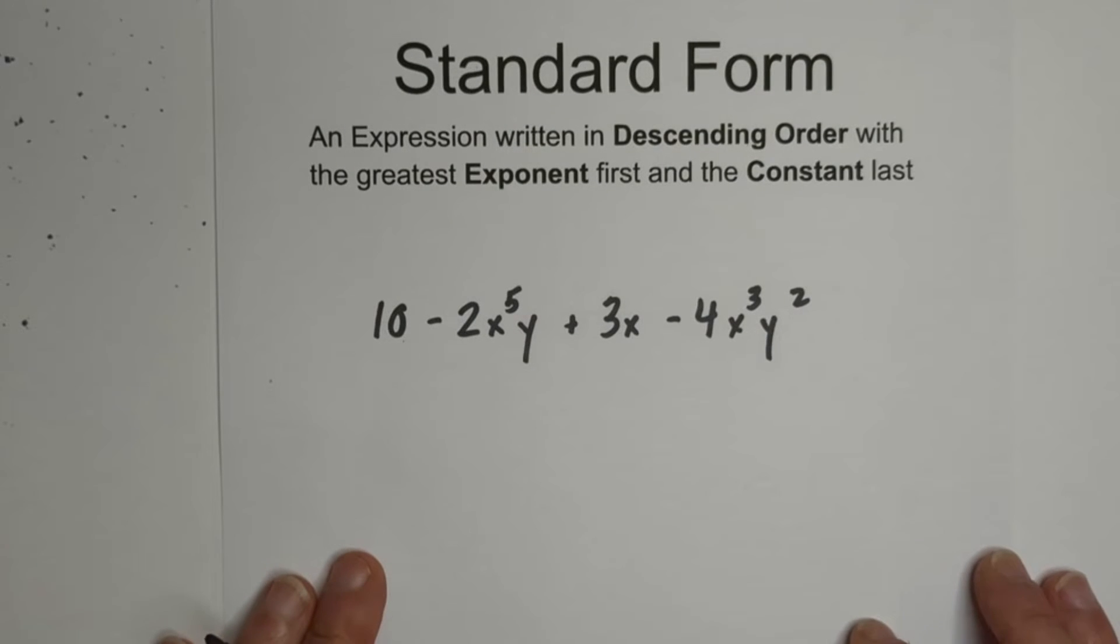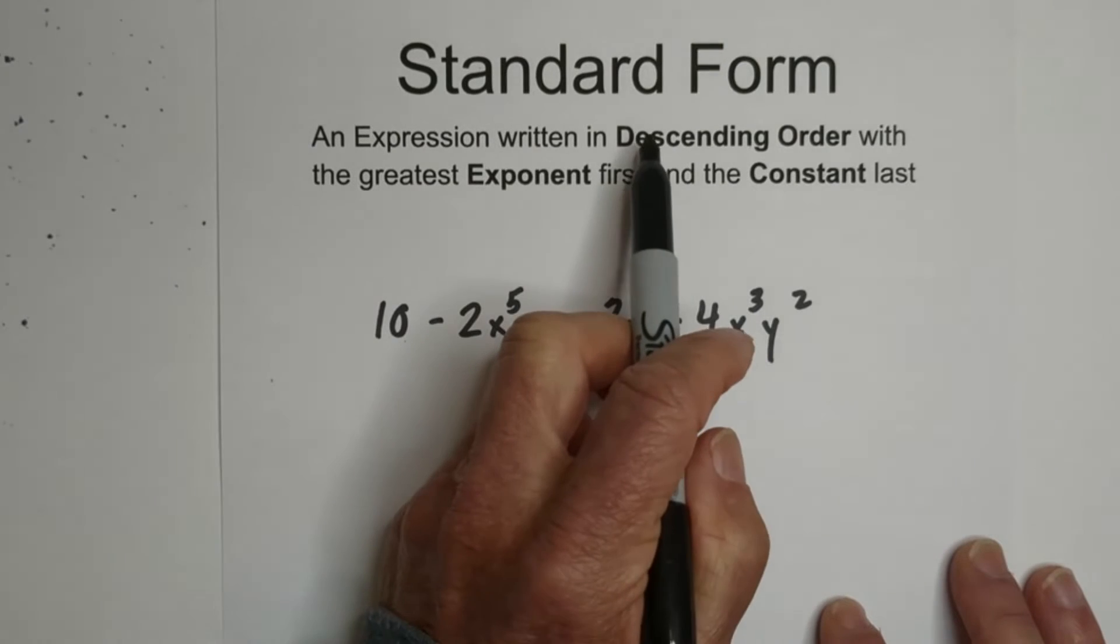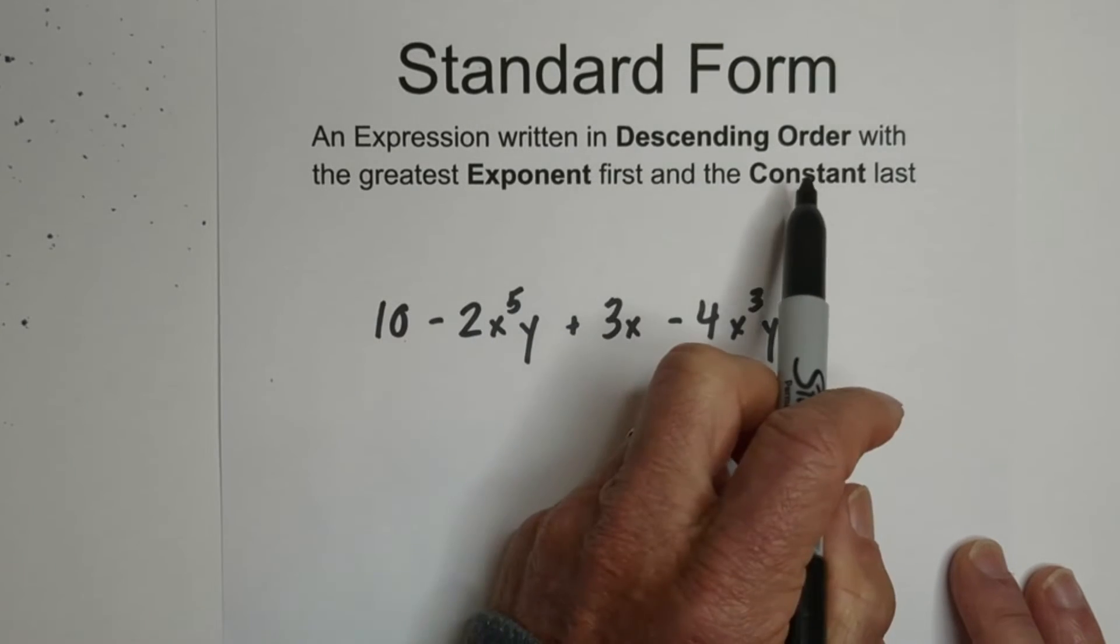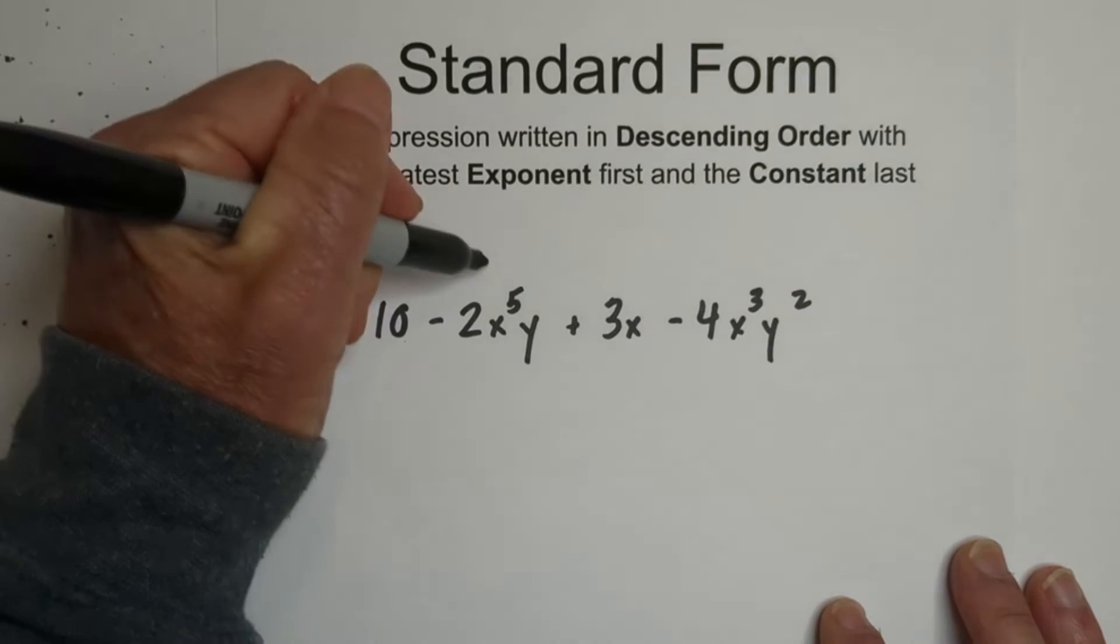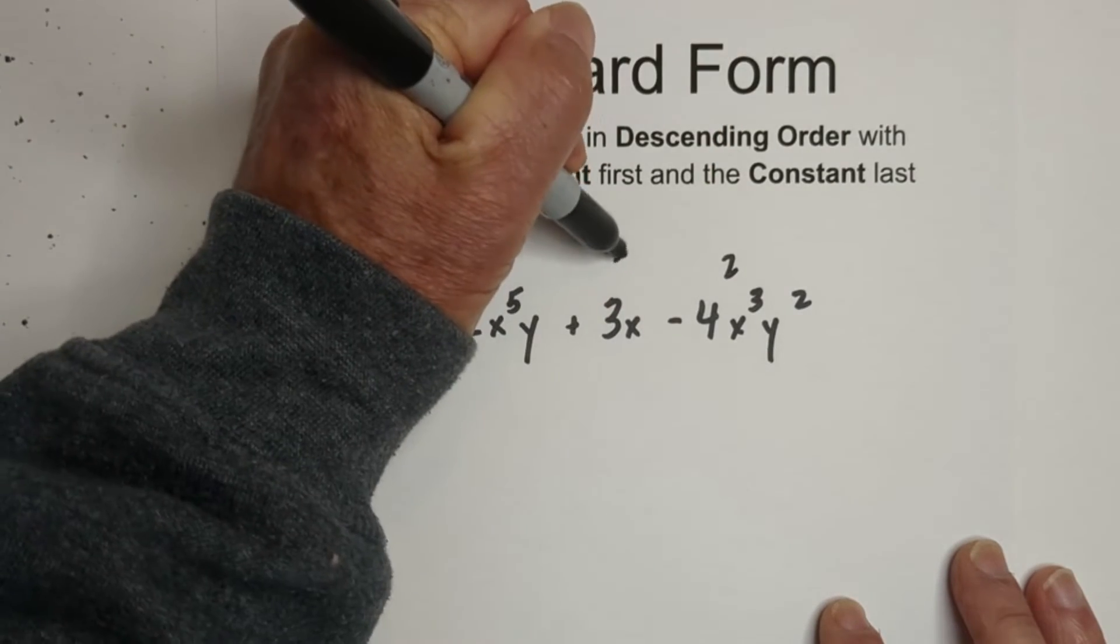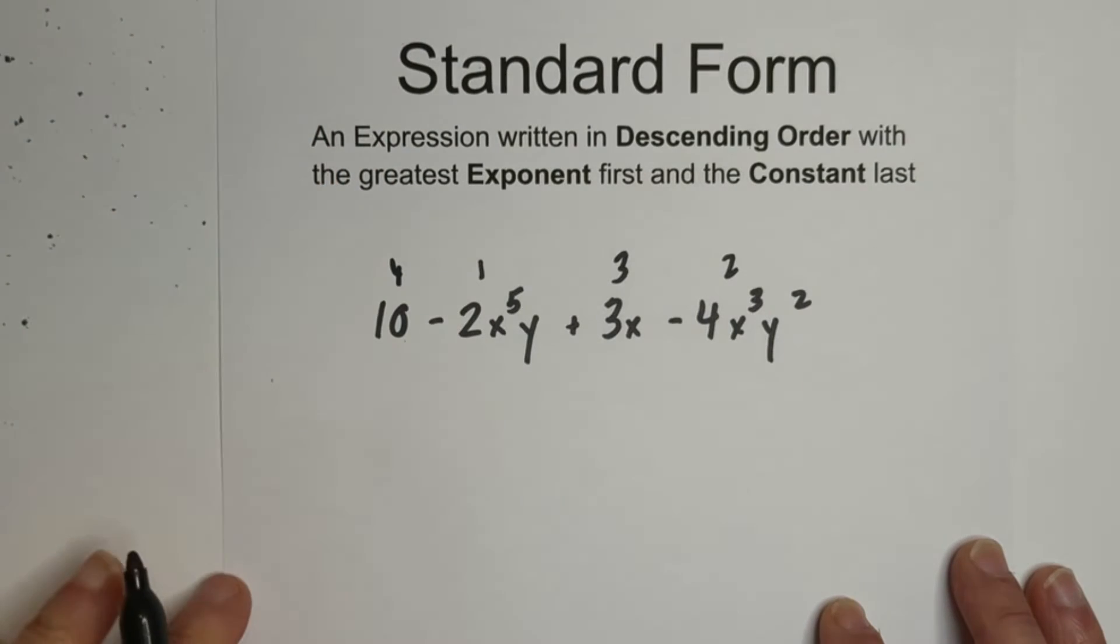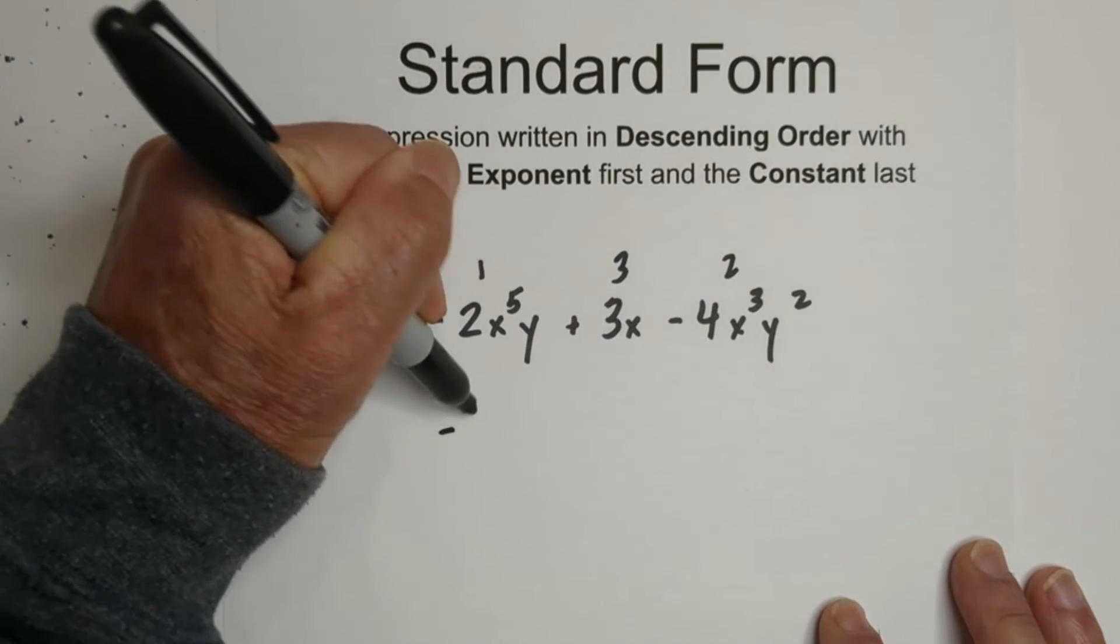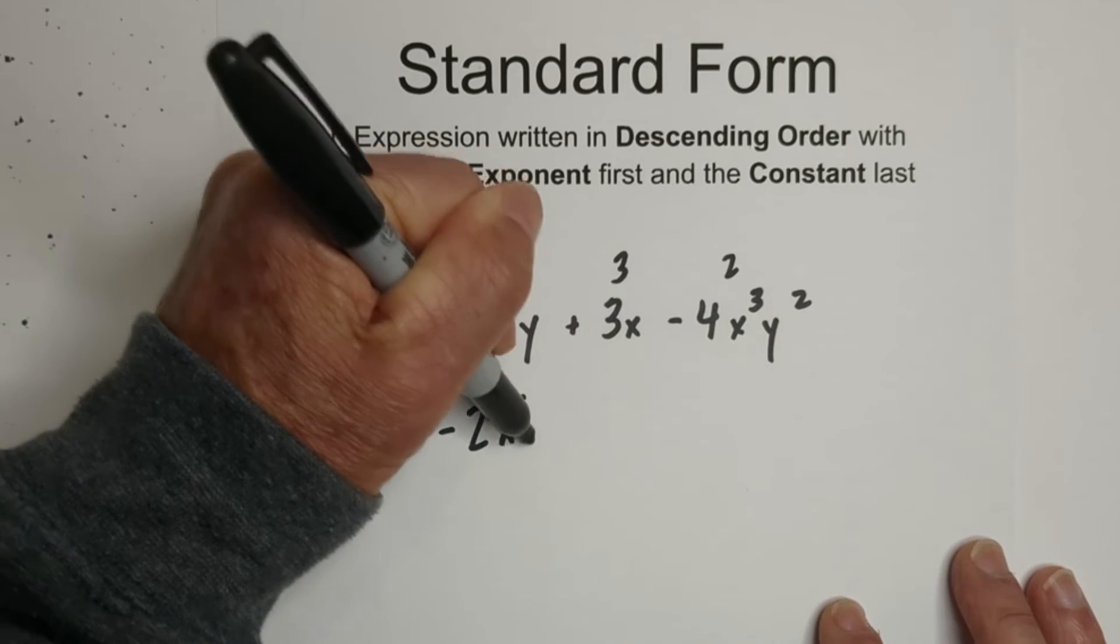And our final example. Again, remember we're going in descending order, looking at exponent, constant last. So it looks like we have to the fifth power here, it looks like we have one here, we've got a two, three, and then the constant is going to be last. So we got negative x to the fifth y.